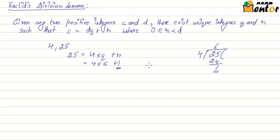Now notice 1 is greater than 0 but less than the divisor which was 4 in this case.